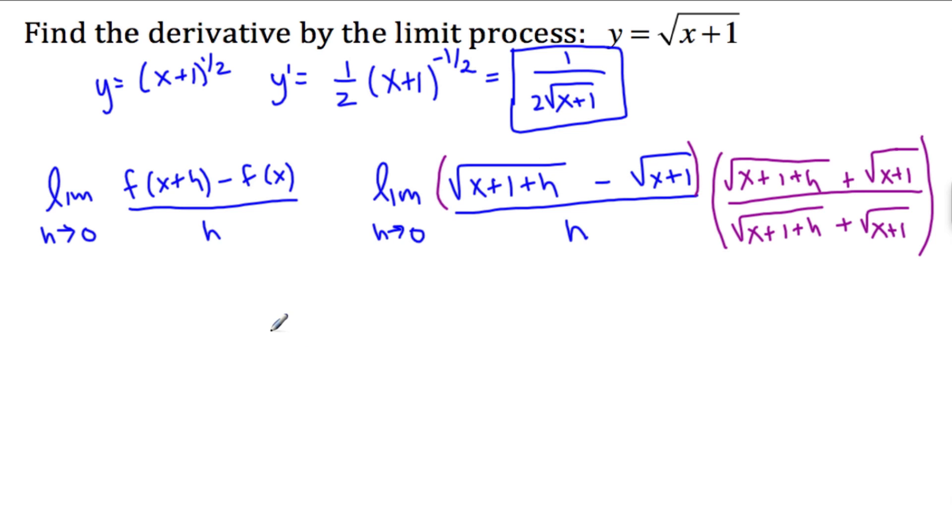And this piece squared will be just x plus 1 plus h. And then this piece squared, the minus though, minus x plus 1. All over h times root x plus 1 plus h plus root x plus 1. And don't forget your limit as h approaches 0.